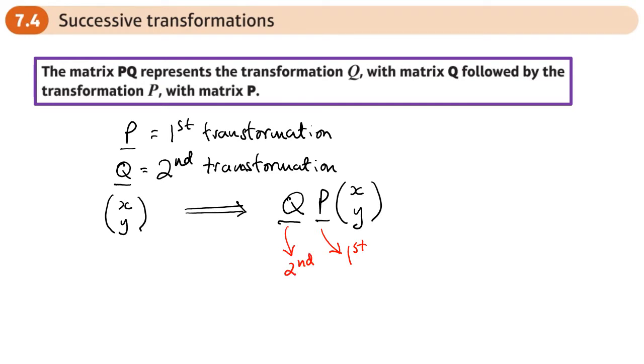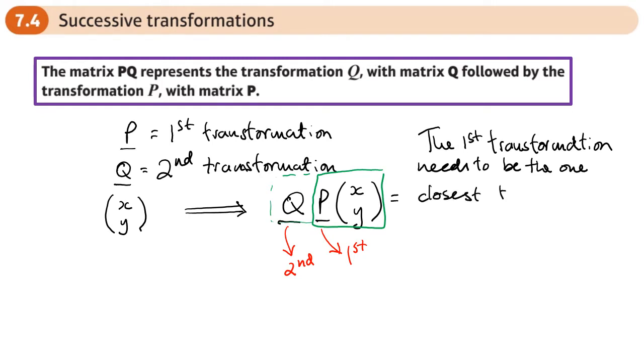And then obviously we would multiply this out. Maybe we would multiply these two together first. And then once we've done that, then we'd multiply it by this one. But the important thing is this. The first transformation needs to be the one closest to your image points. Oh, sorry, your object points. The ones that you're starting with. They need to be close. You get the order wrong. You'll get the wrong answer.